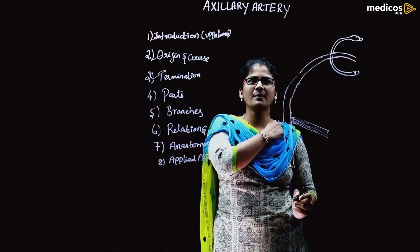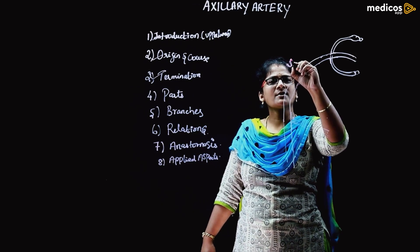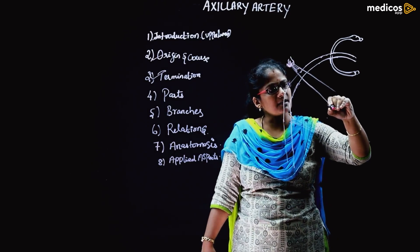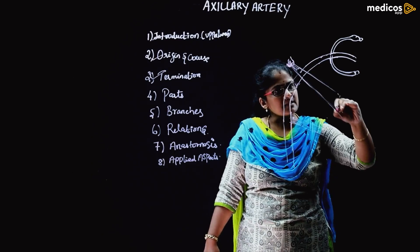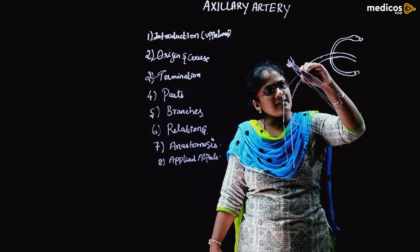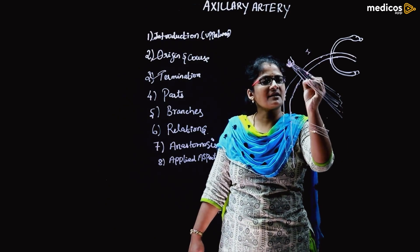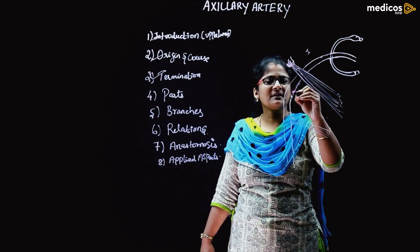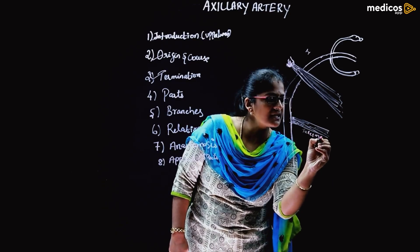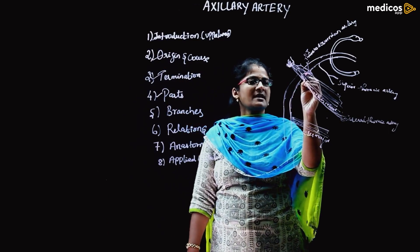During its travel from the outer border of the first rib to the lower border of the teres major, it is crossed by the coracoid process of the scapula, where the pectoralis minor muscle is inserted. This divides the axillary artery into three parts: the first part which is medial to the pectoralis minor, the second part which is posterior to it, and the third part which is lateral to it.